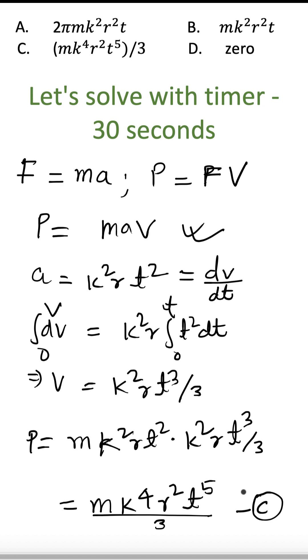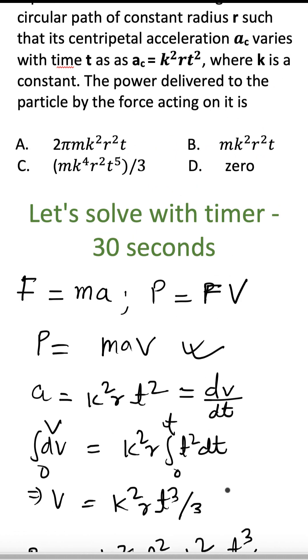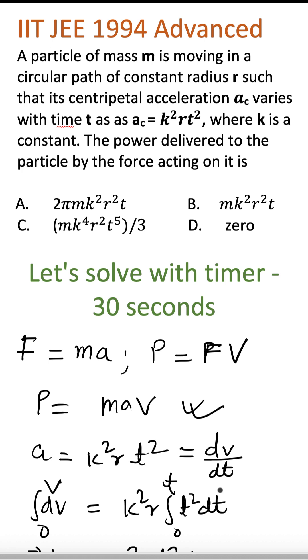Can you also compute the power when the object is moving in the circle of constant radius r with let's say some constant velocity v. Can you compute the power and post your answer in the comment?